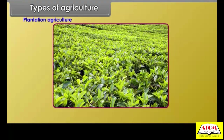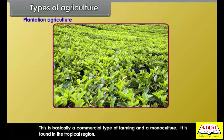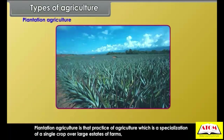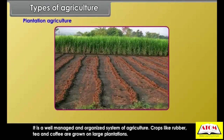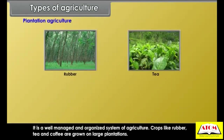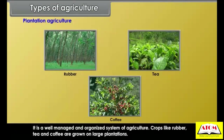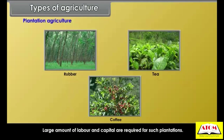Plantation agriculture is basically a commercial type of farming and a monoculture, found in the tropical region. It is the specialization of a single crop over large estates or farms where most of the work is done on a scientific basis. It is a well-managed and organized system of agriculture. Crops like rubber, tea and coffee are grown on large plantations, and large amounts of labor and capital are required.